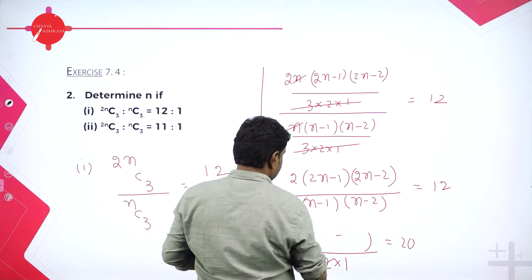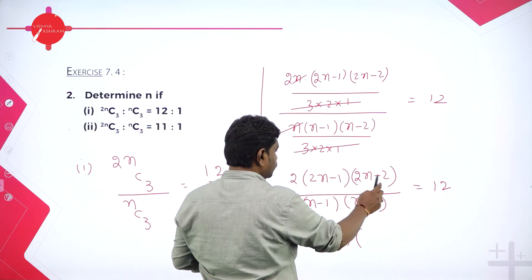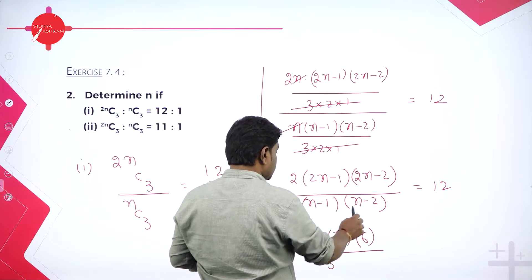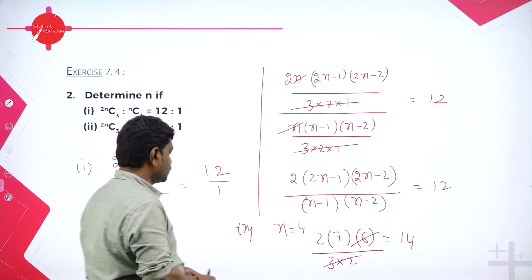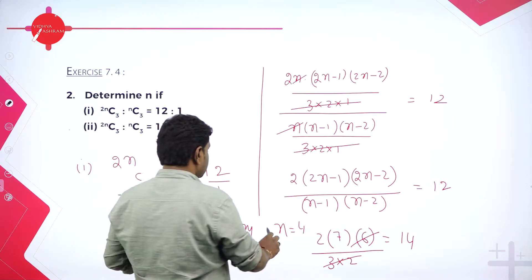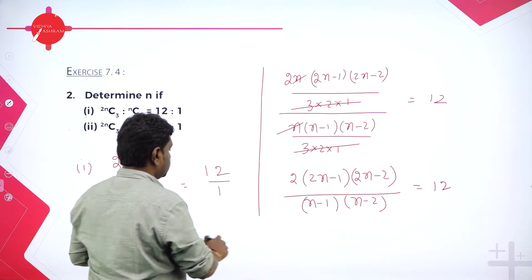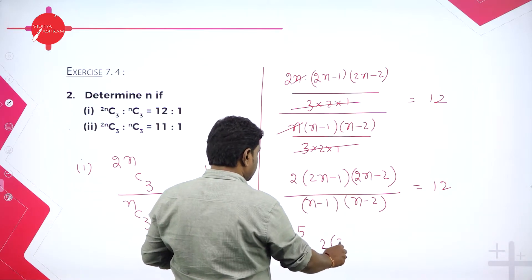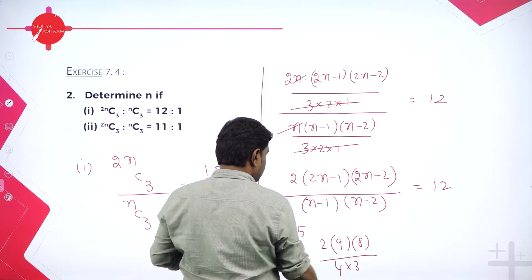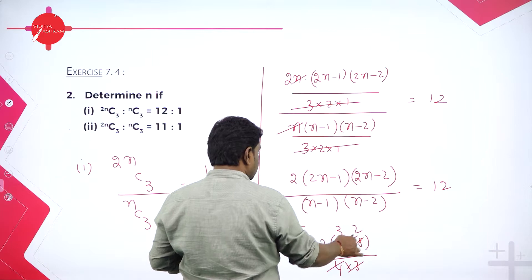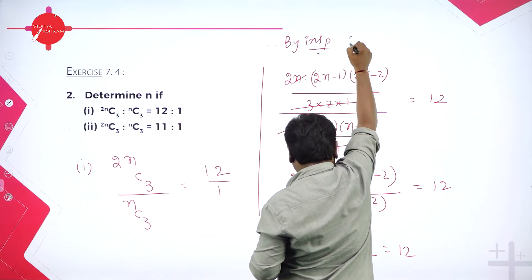Try n=4: 2 into 7 into 6 divided by 3 into 2 — simplifying gives 14, not 12, so n=4 fails. Try n=5: 2 into 9 into 8 divided by 4 into 3 — simplifying: 3 and 3 cancel, 2 and 2 cancel, giving 2×9×8 / (4×3) = 12. By inspection, therefore, n equals 5.